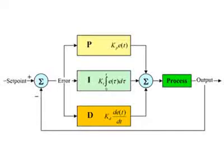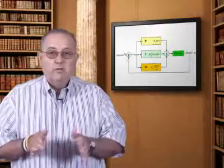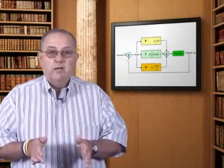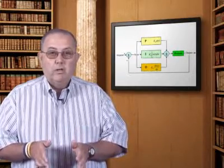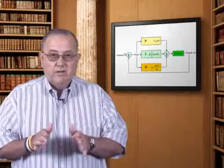Many schemes have been tried to remediate this problem, and these schemes are called control algorithms. The most common control algorithm is PID, which stands for proportional integral derivative control. In this method, the proportional value determines the reaction to the current error, the integral determines the reaction based on the sum of recent errors, and the derivative determines the reaction to the rate at which the error has been changing. The output of the controller to the final control element is the weighted sum of these three values.